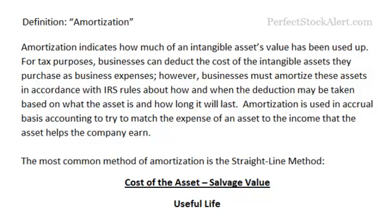Amortization indicates how much of an intangible asset's value has been used up. It's important that you note this is an intangible asset we're talking about — if it were a tangible asset, we'd be talking about something completely different. For tax purposes, businesses can deduct the cost of the intangible assets they purchase as business expenses. However, businesses must amortize these assets in accordance with IRS rules about how and when the deductions may be taken, based on what the asset is and how long it will last. Amortization is used in accrual basis accounting to try to match the expenses of an asset to the income that the asset helps the company to create or earn.